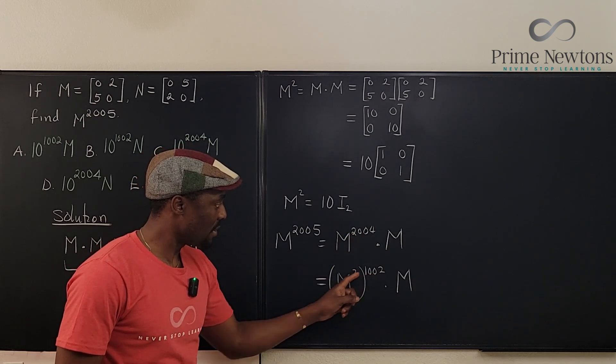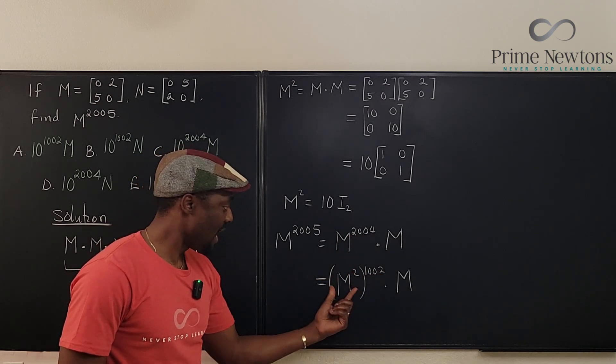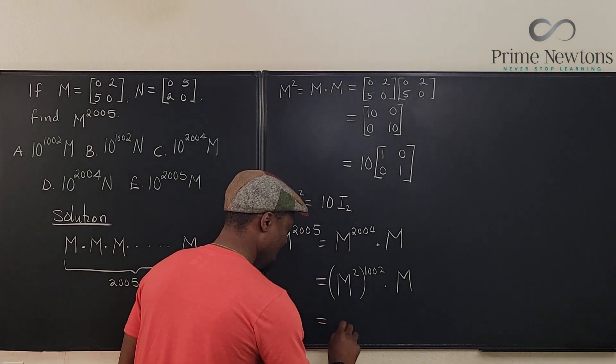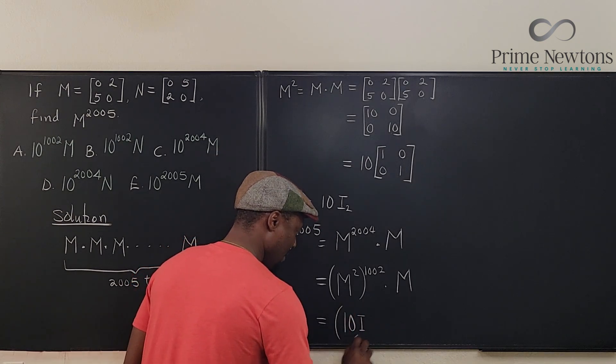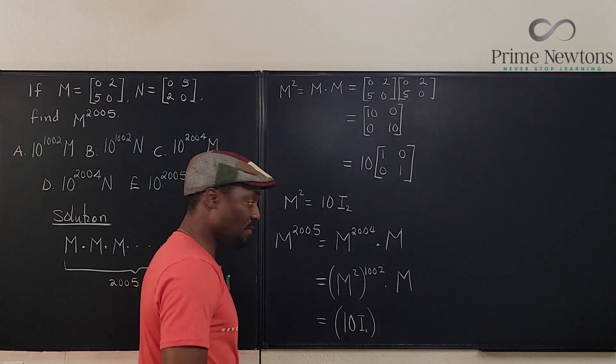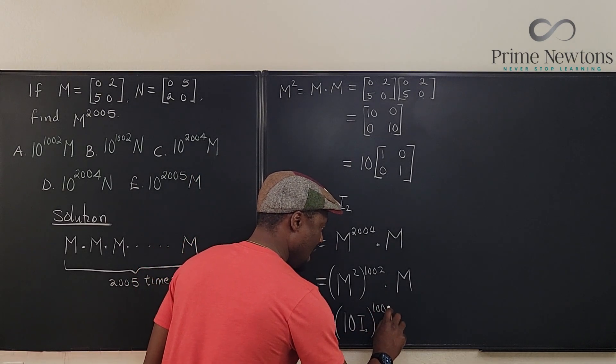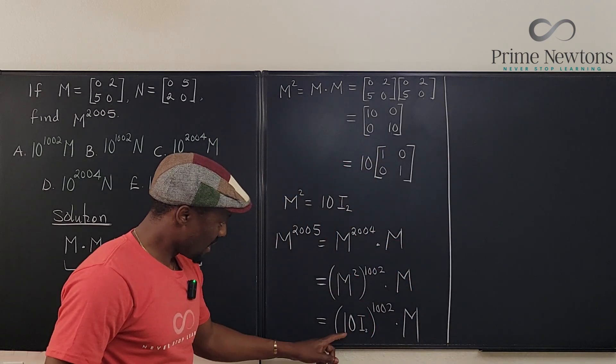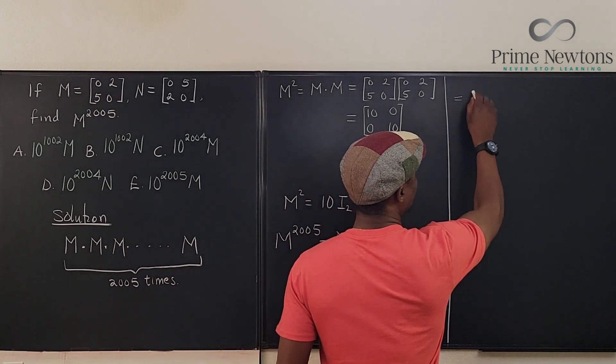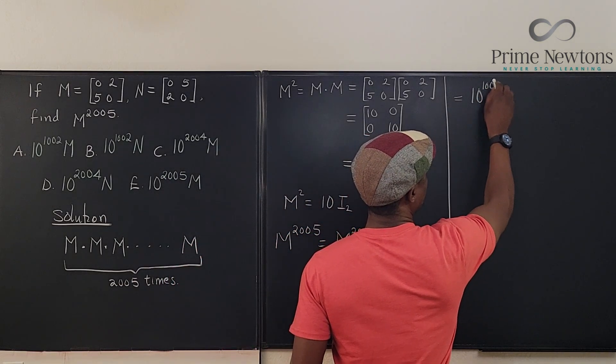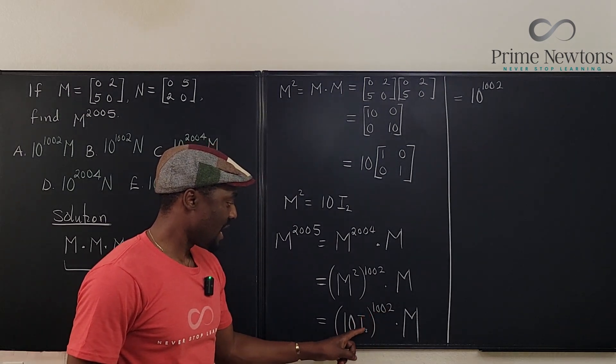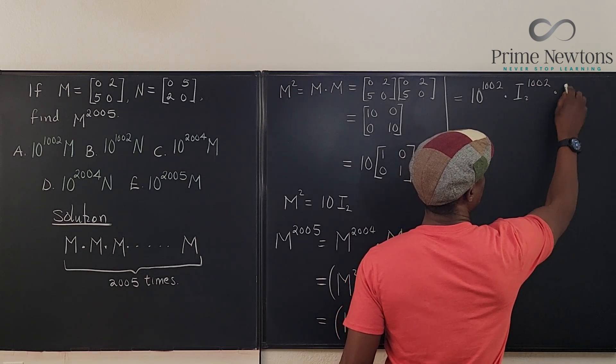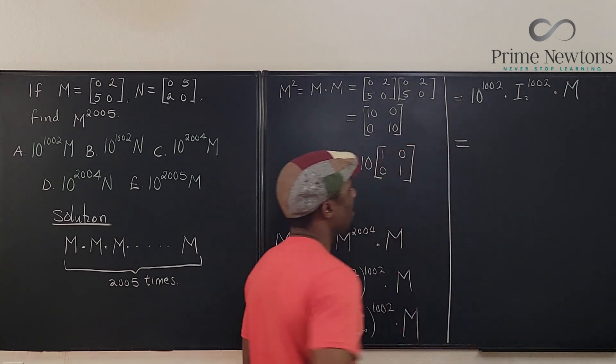But I don't want to write this as M to the 2004 because I already know what M squared is. So I can write this to be equal to M squared to the 1002 times M. You see, I have halved this power. Instead of 2004, I wrote 1002. And now what is my M squared? It's 10I. So this is equal to (10I) raised to power 1002 times M.